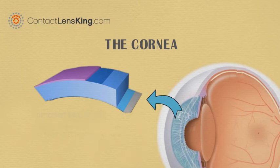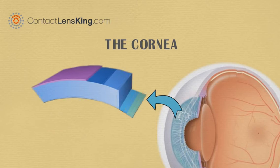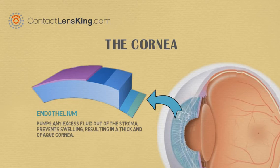The innermost layer of the cornea is the endothelium. The endothelium's primary task is to pump any excess fluid out of the stroma, preventing swelling that would result in a thick and opaque cornea.